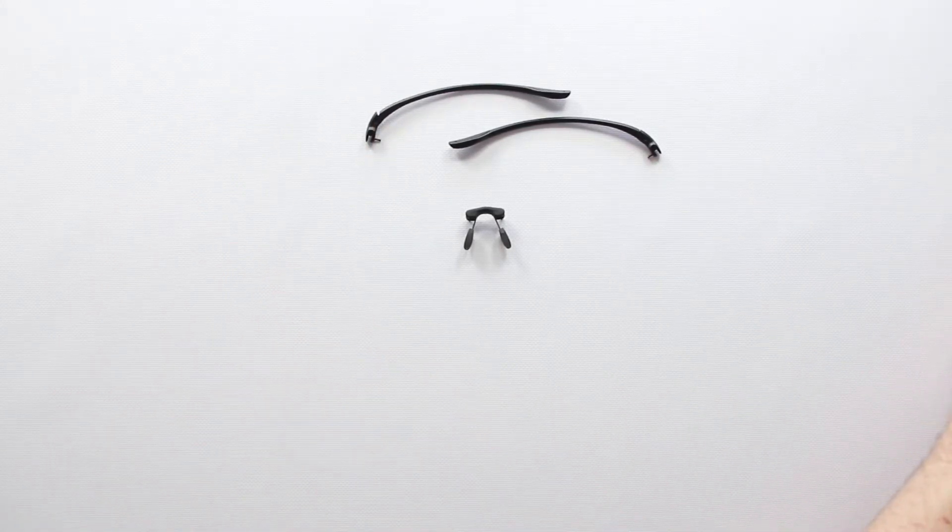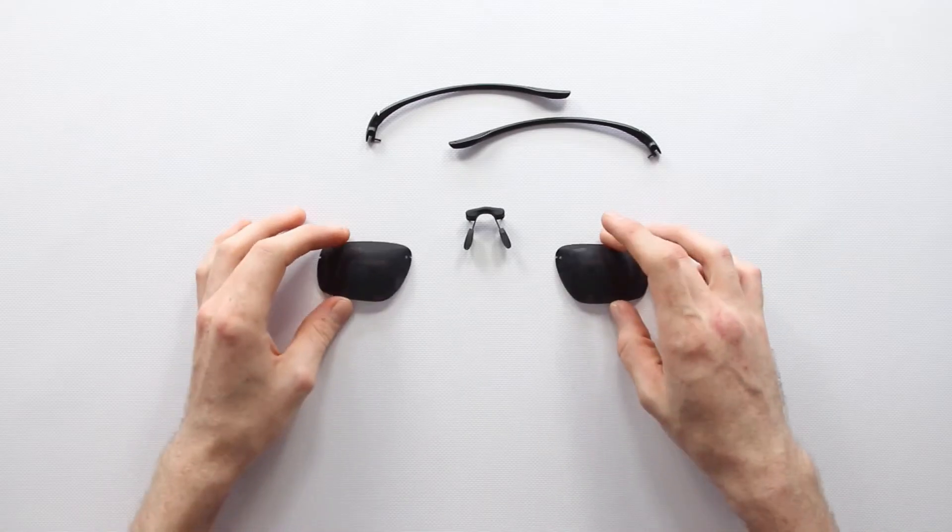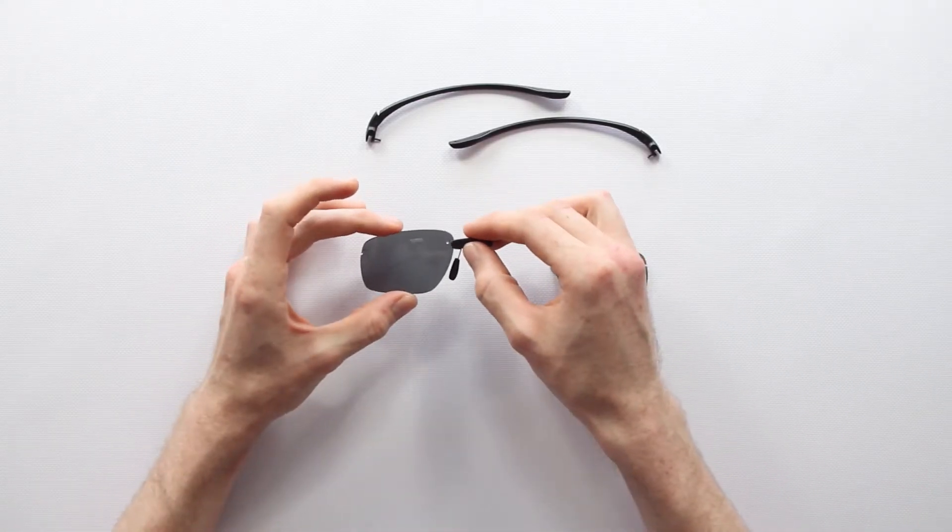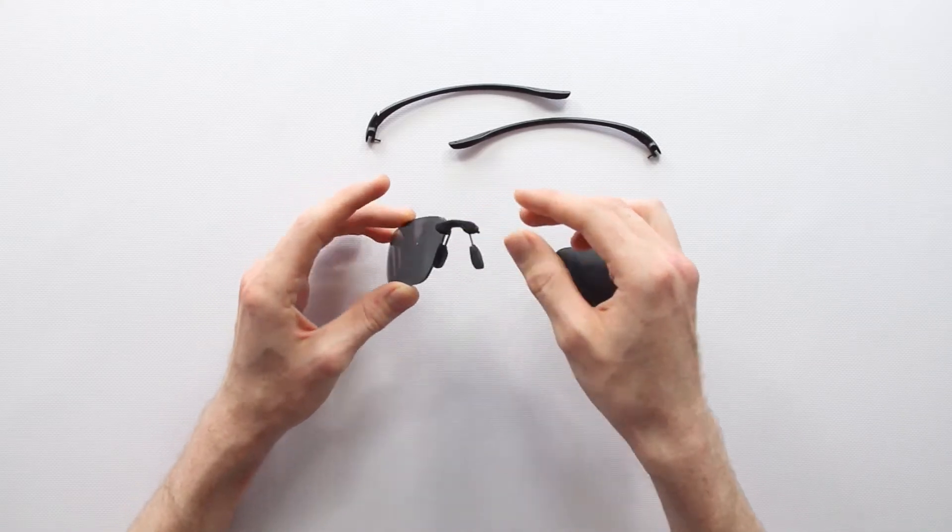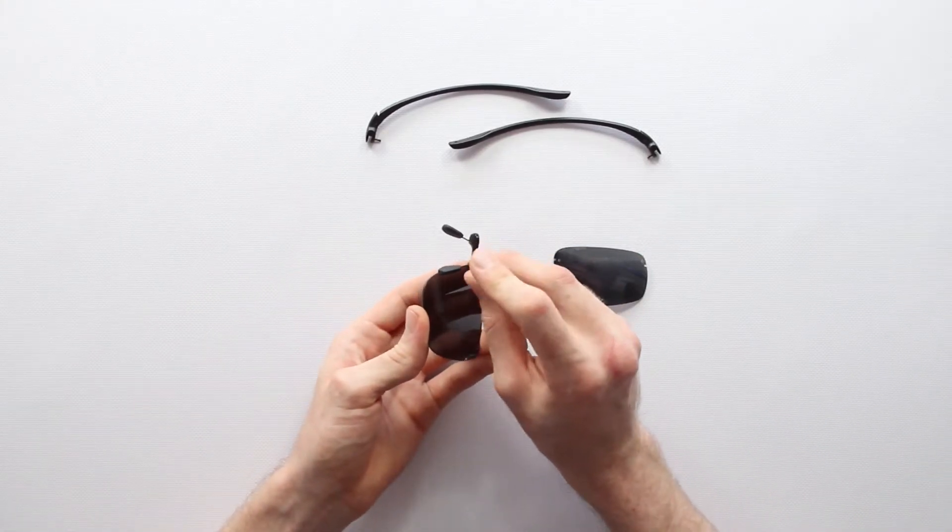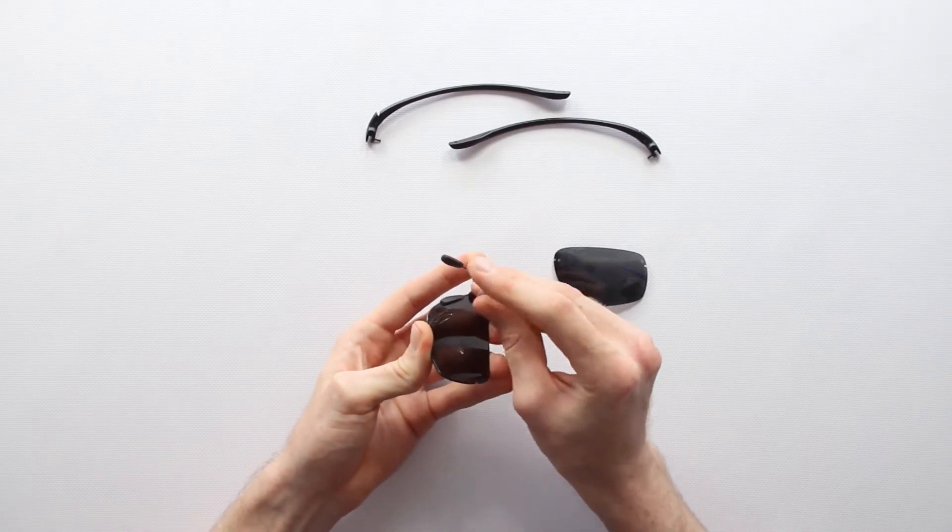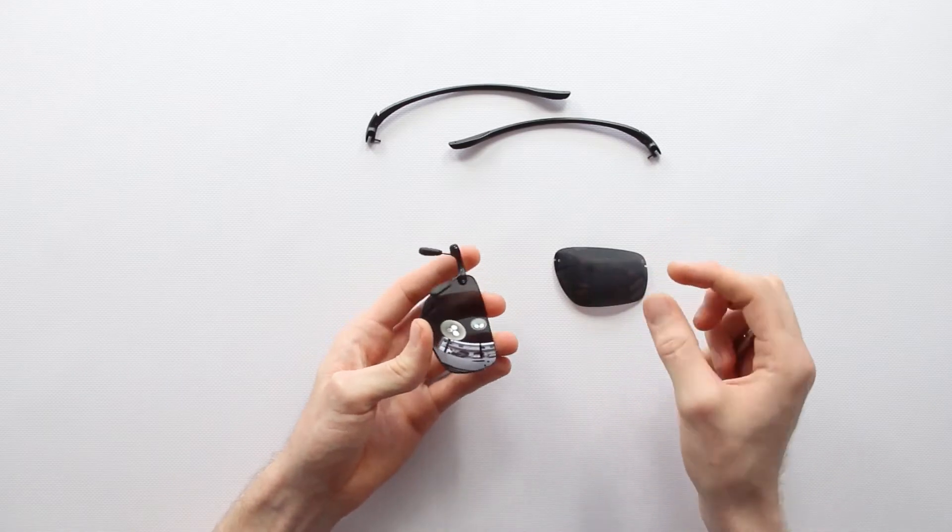Now that you've got the old lenses out, let's get the new ones in. To install your new lenses simply fit the lens into the grooves in each arm and in the nose bridge piece. Apply some pressure to the lens until it fits into place.